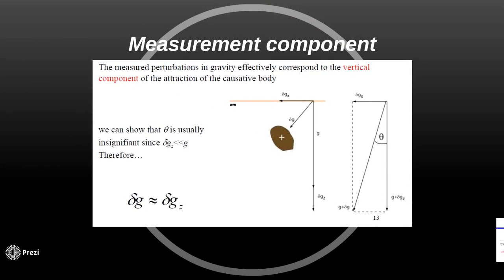Measurement component. The causative body affects almost only the vertical component. Since the angles do not play any role, the result on delta G is approximated with delta GZ, the vertical component of that change. Lateral displacement along the surface for short distances doesn't make any contrast in gravity changes.